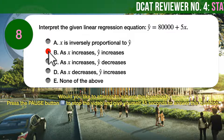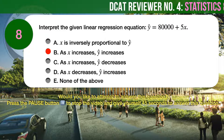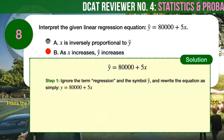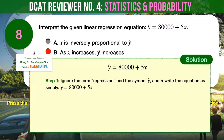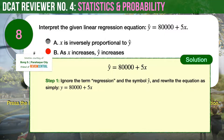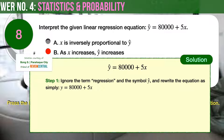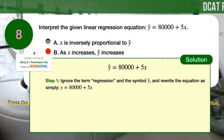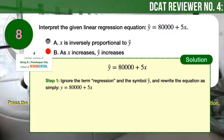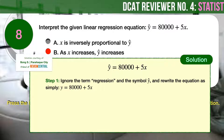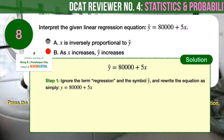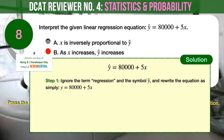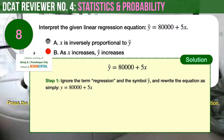The correct answer is B — as x increases, ŷ increases. The statistical term regression and the ŷ symbol in the question may easily scare many test takers. But if we ignore the term regression and read the equation simply as y is equal to 80,000 plus 5x, we can see that this is just a basic algebra problem. By simple inspection, as x increases in value, the value of ŷ also increases.